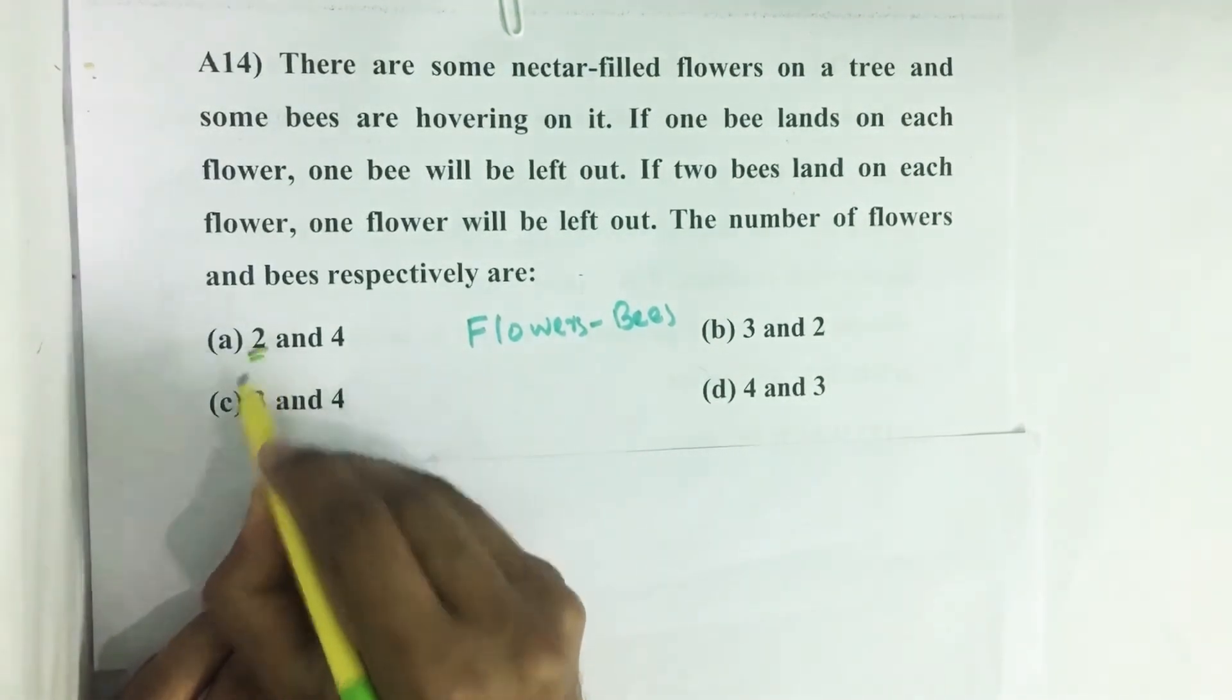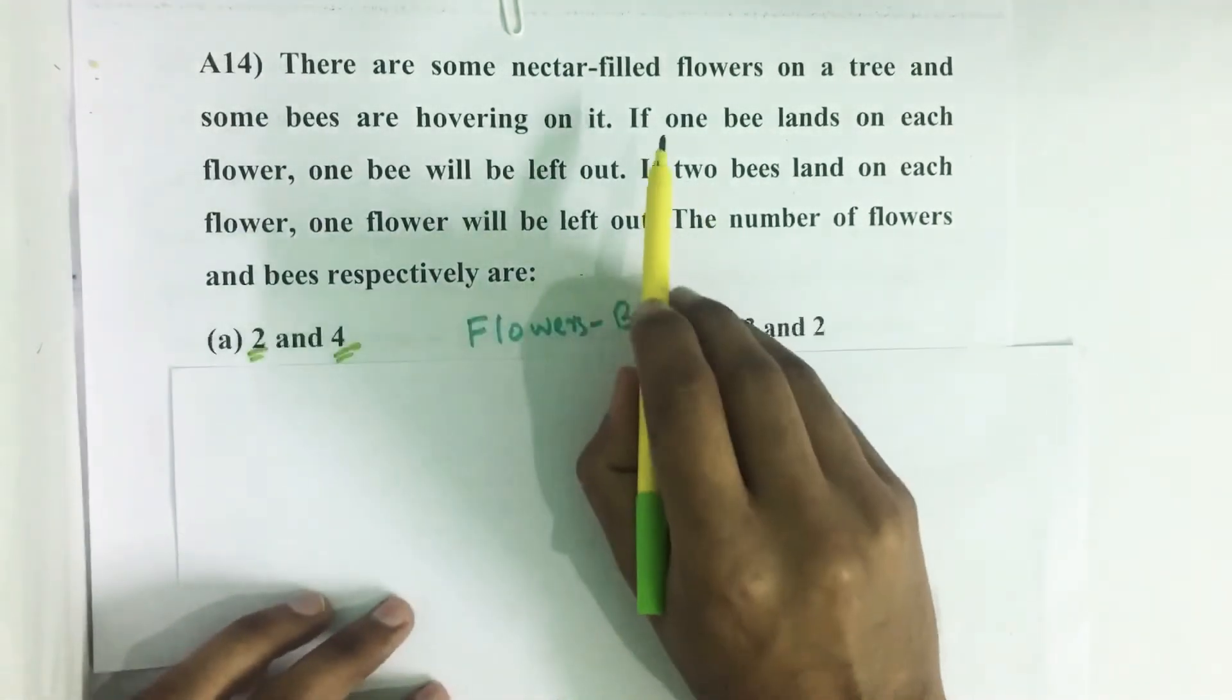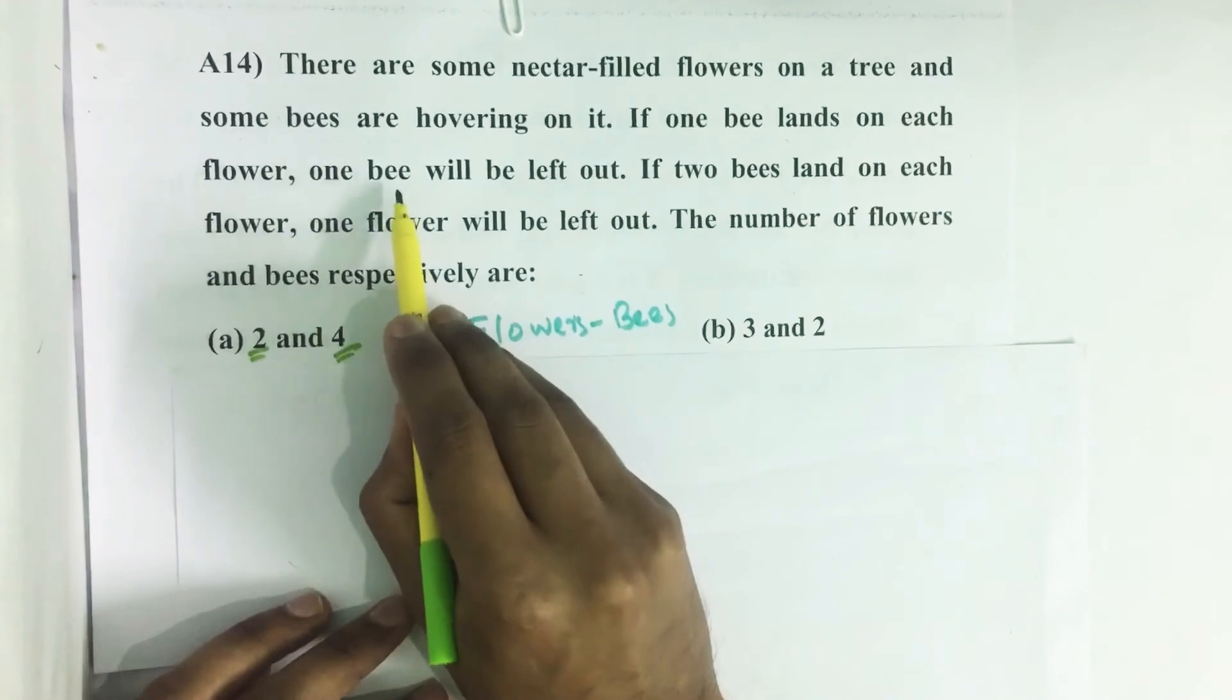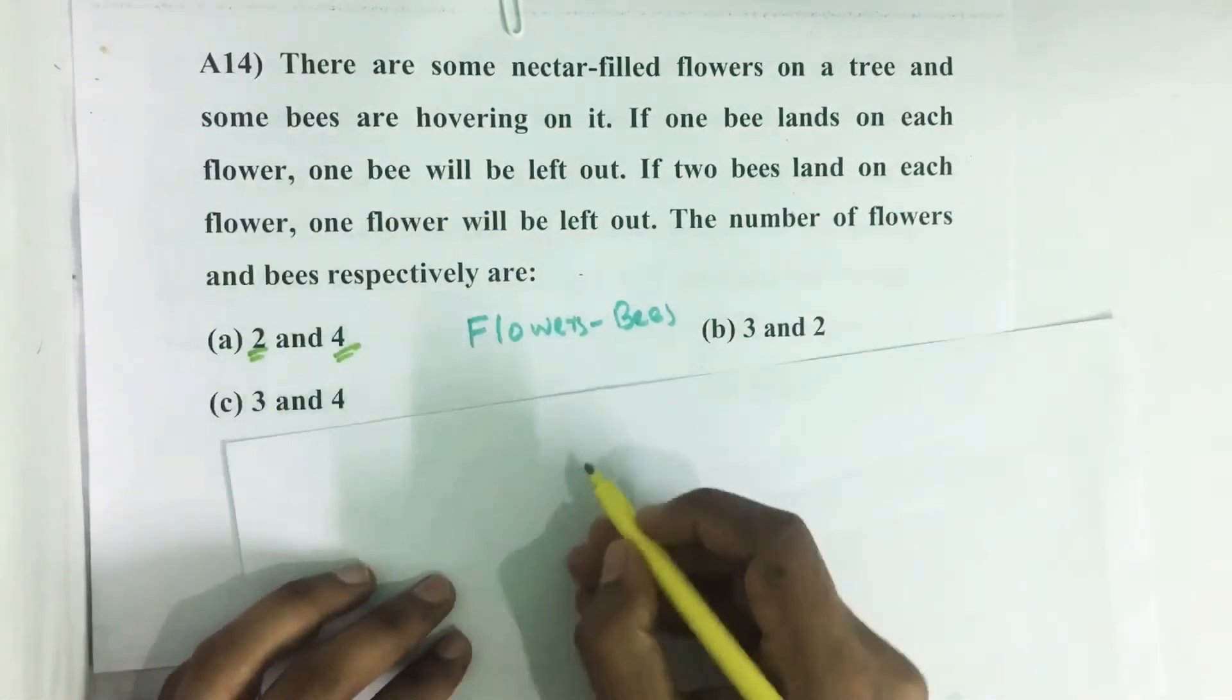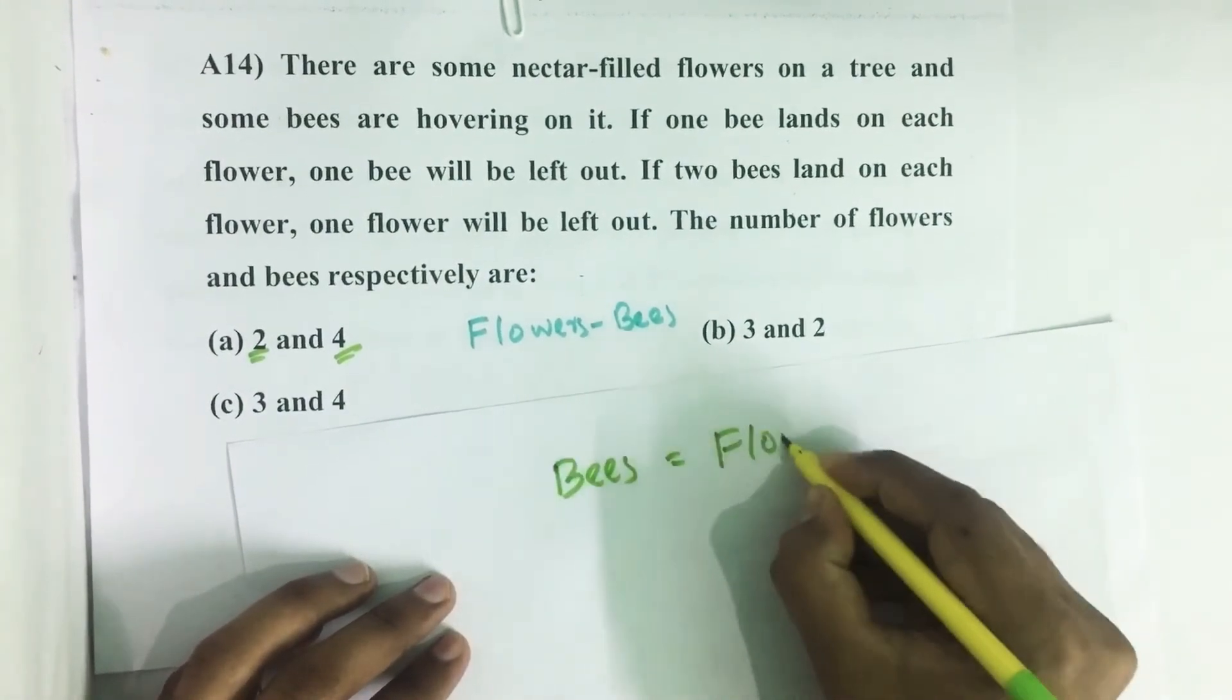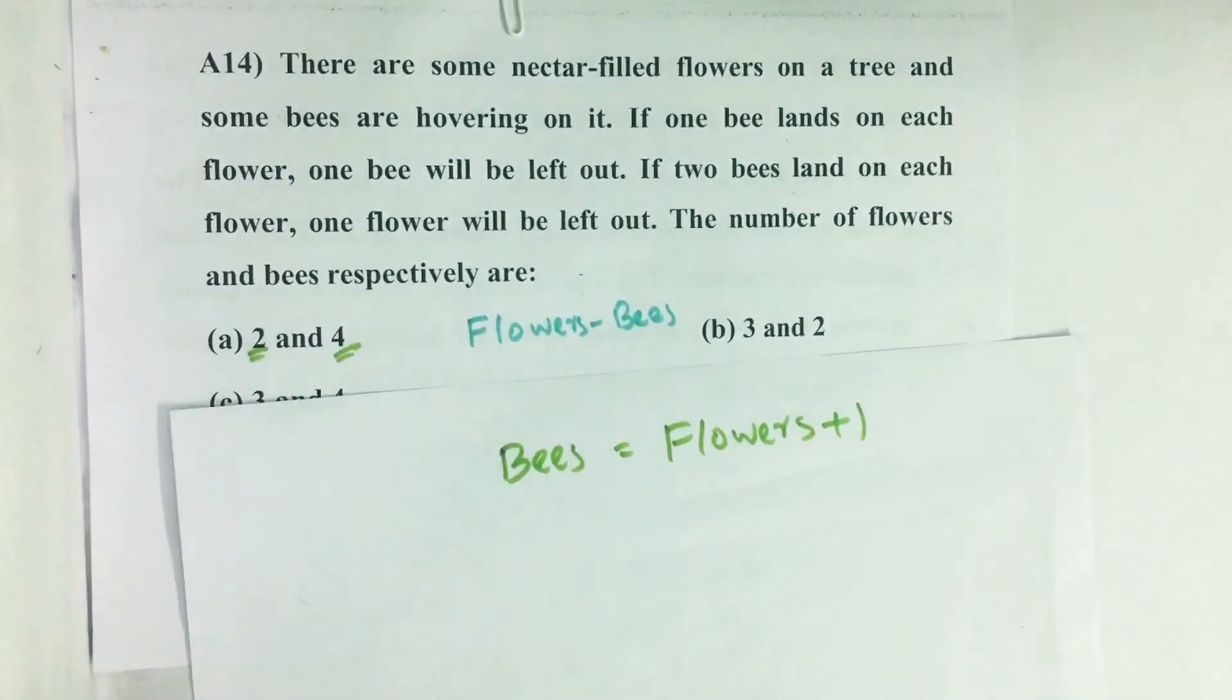The first one is number of flowers and the second one is number of bees. Then it is given that if one bee lands on each flower, one bee will be left out. That means number of bees equals number of flowers plus one. Bees are larger in number than flowers.